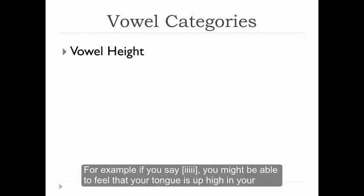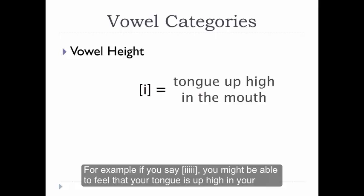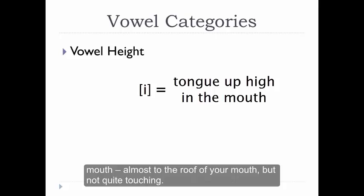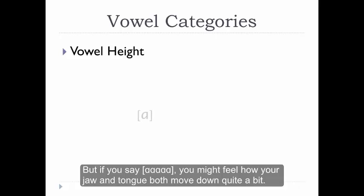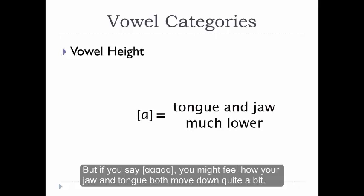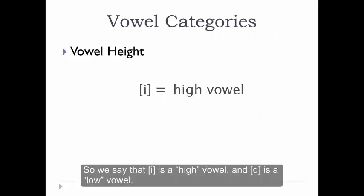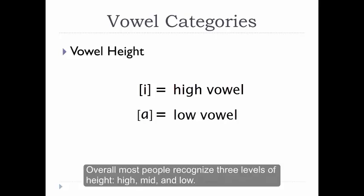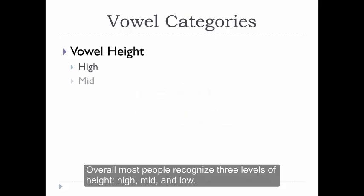For example, if you say E, you might be able to feel that your tongue is up high in your mouth, almost to the roof of your mouth, but not quite touching. But if you say AH, you might feel how your jaw and tongue both move down quite a bit. So we say that E is a high vowel, and AH is a low vowel. Overall, most people recognize three levels of height: high, mid, and low.